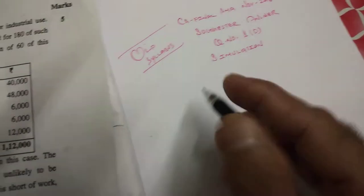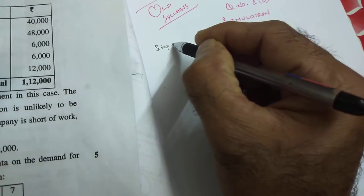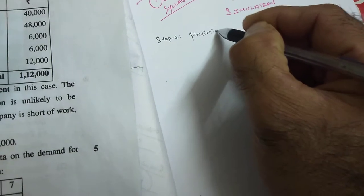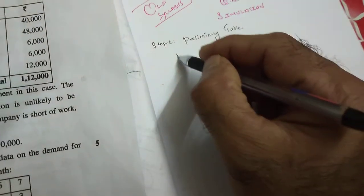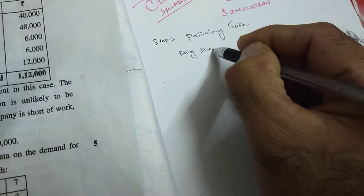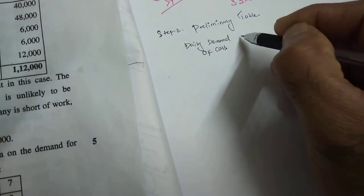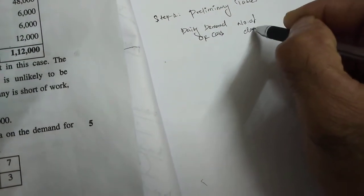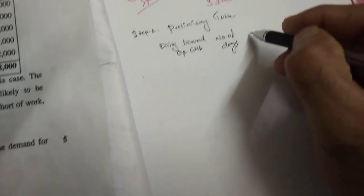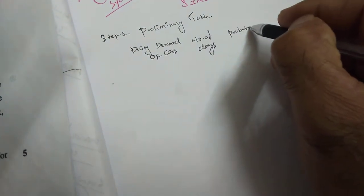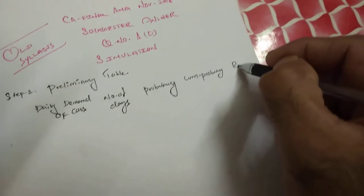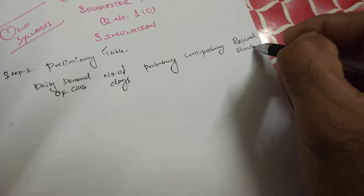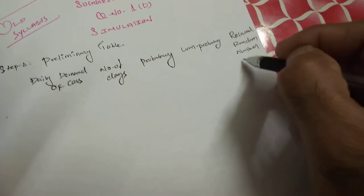Now we have already read the question, so we start preparing. This is Step 1: the preliminary table. In the preliminary table, you have to write the following columns: daily demand of cars, number of days, probability, cumulative probability, and related random number intervals.